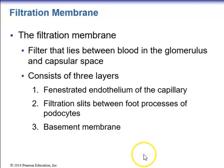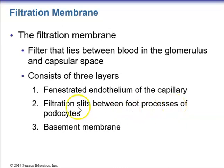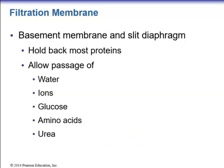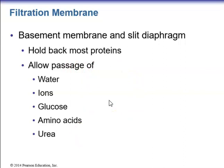The filtration membrane is a filter between blood in the glomerulus and the capsular space. It consists of three layers: the fenestrated endothelium of the capillary, the filtration slits between the foot processes of the podocytes, and a basement membrane between these two layers. The basement membrane and slit diaphragm hold back most proteins but allow passage of water, ions, glucose, amino acids, and urea — 99% of which are resorbed back into the peritubular capillaries.